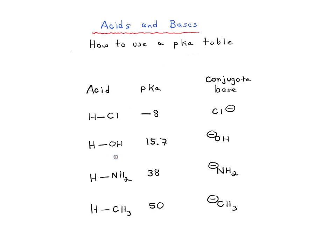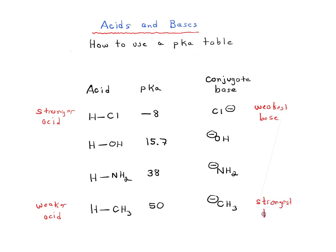The key thing when talking about pKa's is that as we go from low pKa — negative numbers — to higher numbers, we start with the stronger acid at the top. At the bottom, methane is a weaker acid. Remember, a weak acid does not mean it's a strong base. But its conjugate base — HCl gives us the weakest conjugate base, while CH3⁻ gives us the strongest conjugate base. So it goes from stronger acid to weaker acid, and stronger base to weaker base — a yin and yang aspect of acidity and basicity.